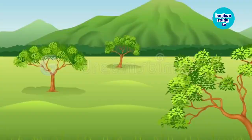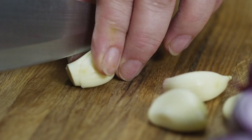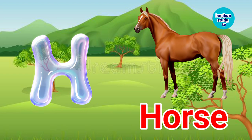G. G for garlic. Garlic means lehsan. H for horse. Horse means ghora.